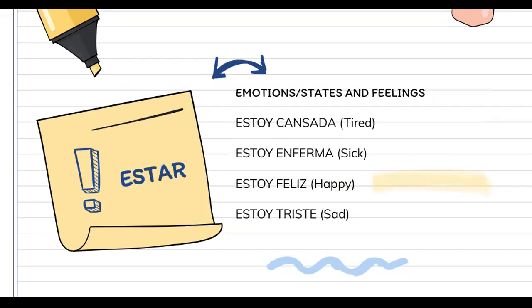Pero estar se usa — we use estar cuando hablamos de emociones, states and feelings. Entonces, we use estar when we are explaining emotions, states and feelings. This, on the other hand, is only temporary. Examples are: estoy cansada, estoy enferma, estoy feliz y estoy triste — I am tired, I'm sick, I'm happy, I'm sad. But as you can see, these are emotions that are only temporary.